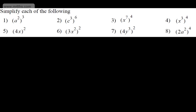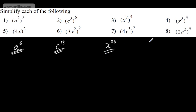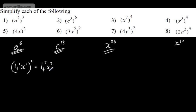Let's simplify each of the following. a squared raised to the power of 3: multiply 2 and 3 to get a to the power of 6. c to the power of 3 raised to the 6th: 3 times 6 gives 18, so c to the 18th. x to the power of 7 raised to the 4th: 7 times 4 is 28, so x to the 28th. For x to the power of 12 — being careful — we have 4 to the power of 1 times x to the power of 1, all raised to the power of 2, giving 4 squared times x squared, which we write as 16x squared.